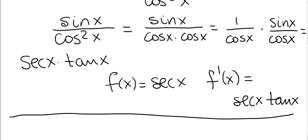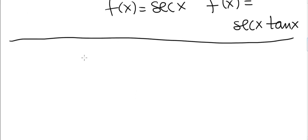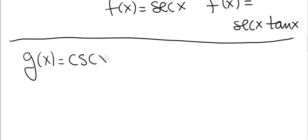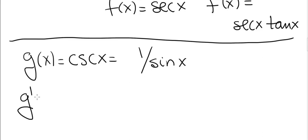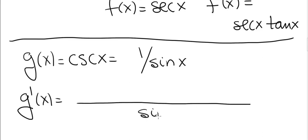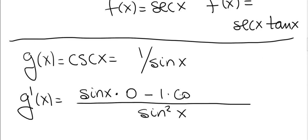Now let g of x be the cosecant function. I'm going to differentiate cosecant of x, so g of x equals cosecant x. Recall that cosecant x is 1 divided by sine of x. Once again we'll use the quotient rule. g prime equals: we square the denominator, which becomes sine squared x. Then the denominator sine x times the derivative of the numerator, which is 0, minus the numerator 1 times the derivative of the denominator, which is cosine of x.